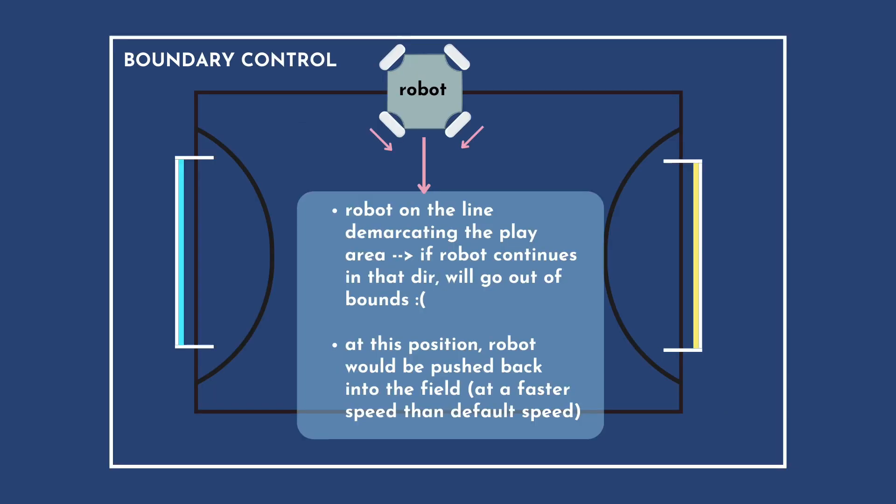Next, boundary control. As we know the coordinates of the playing field, we could get the robot to increase speed and push back into the field when it's along the boundaries of the playing field, preventing it from exceeding the bounds.